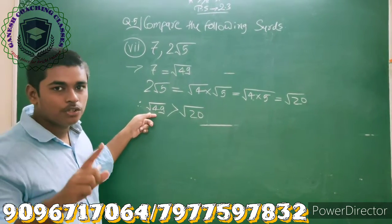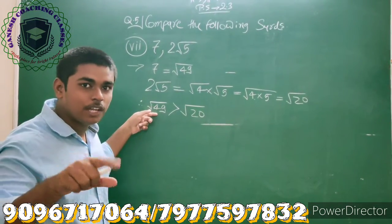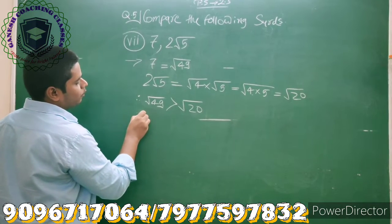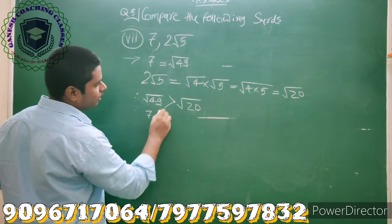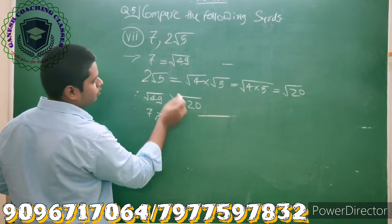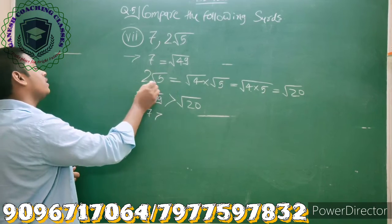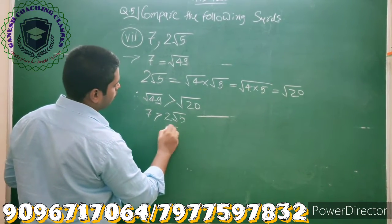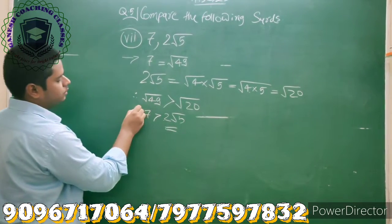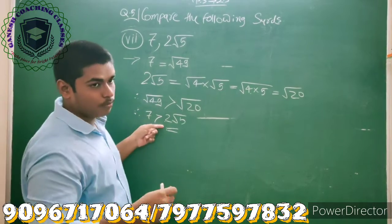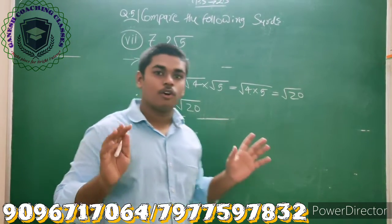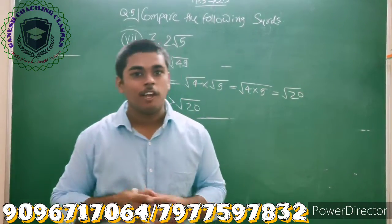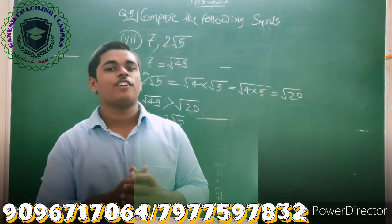So √49 is greater than √20. The value √49 corresponds to 7, and √20 corresponds to 2√5. Therefore, 7 is greater than 2√5. We have solved sub-question 7 of question number 5.